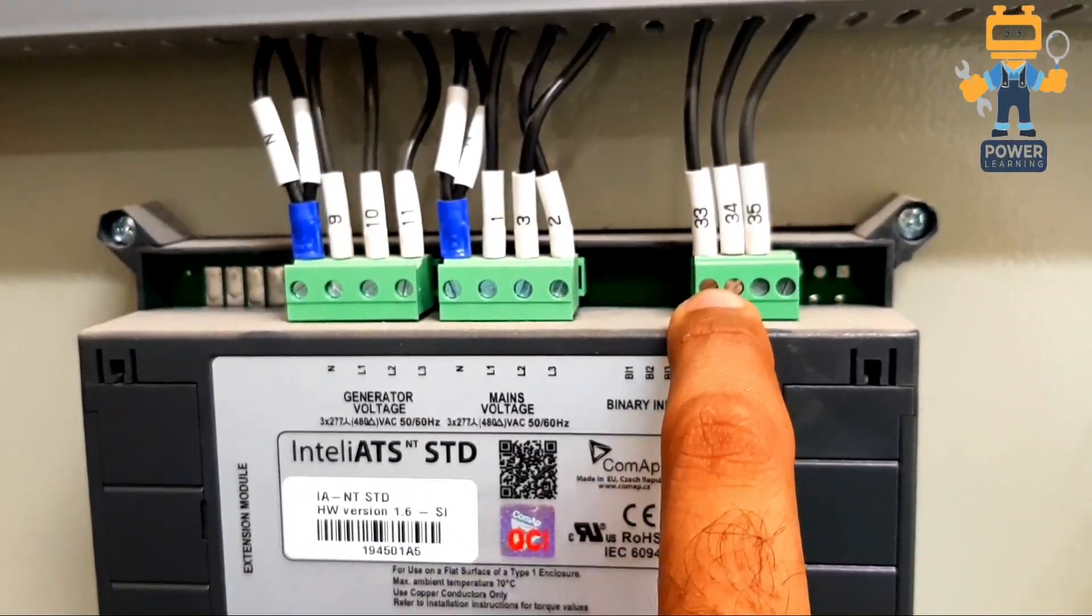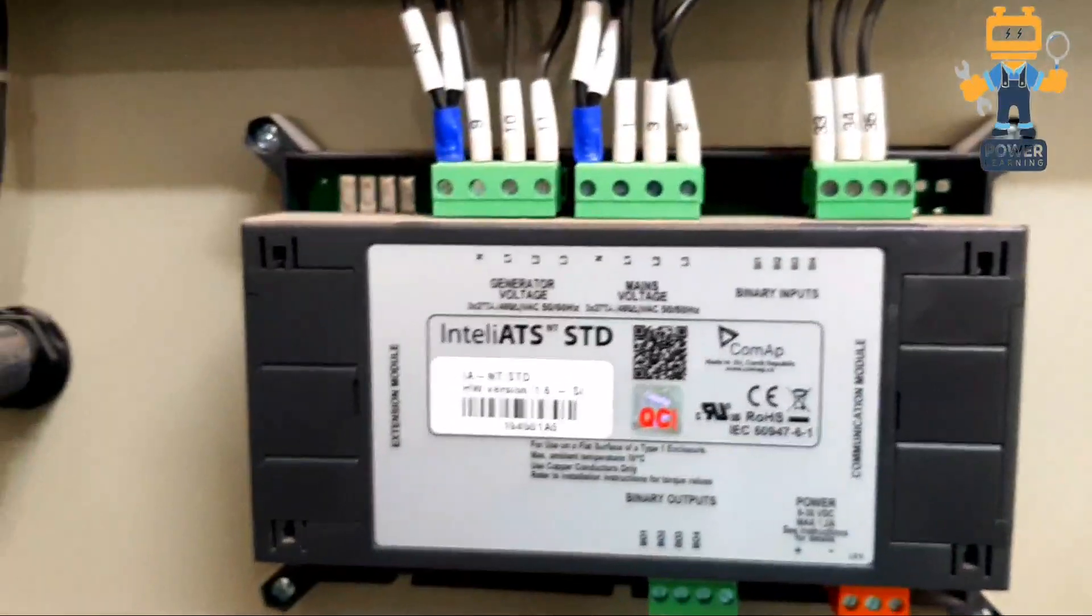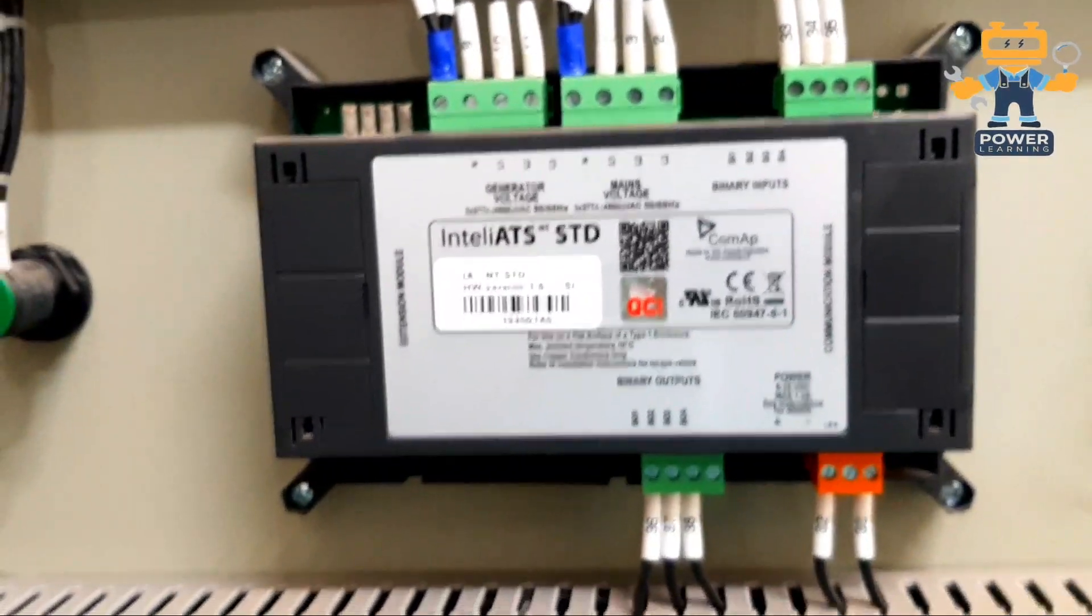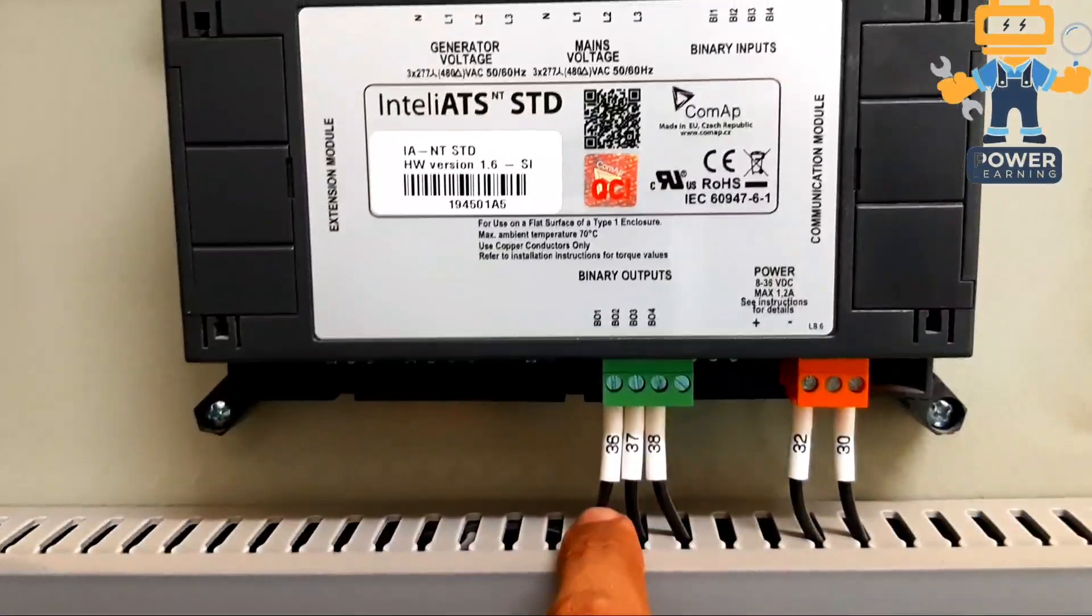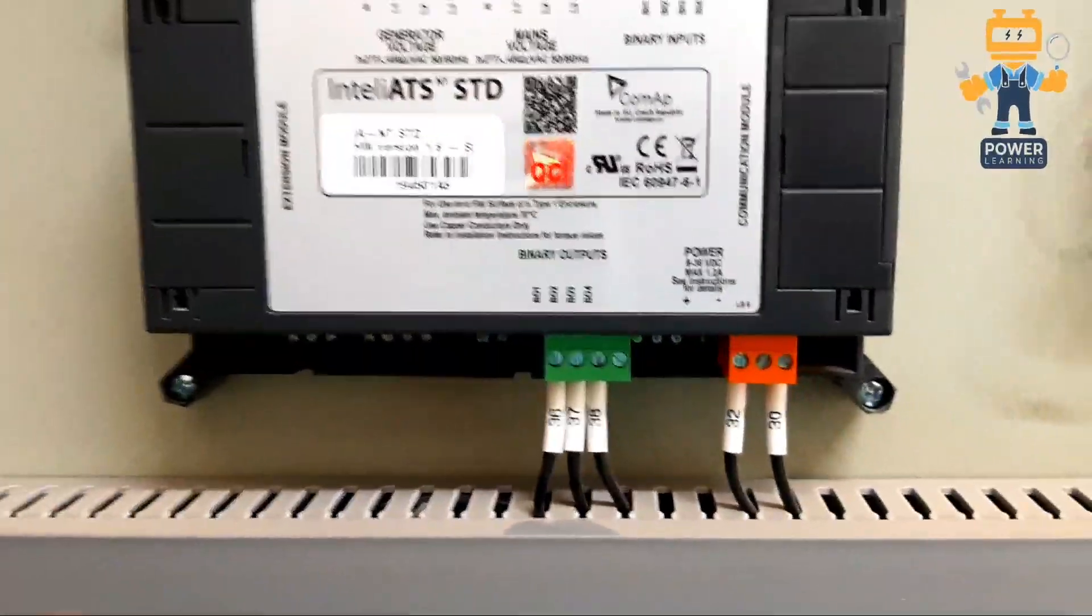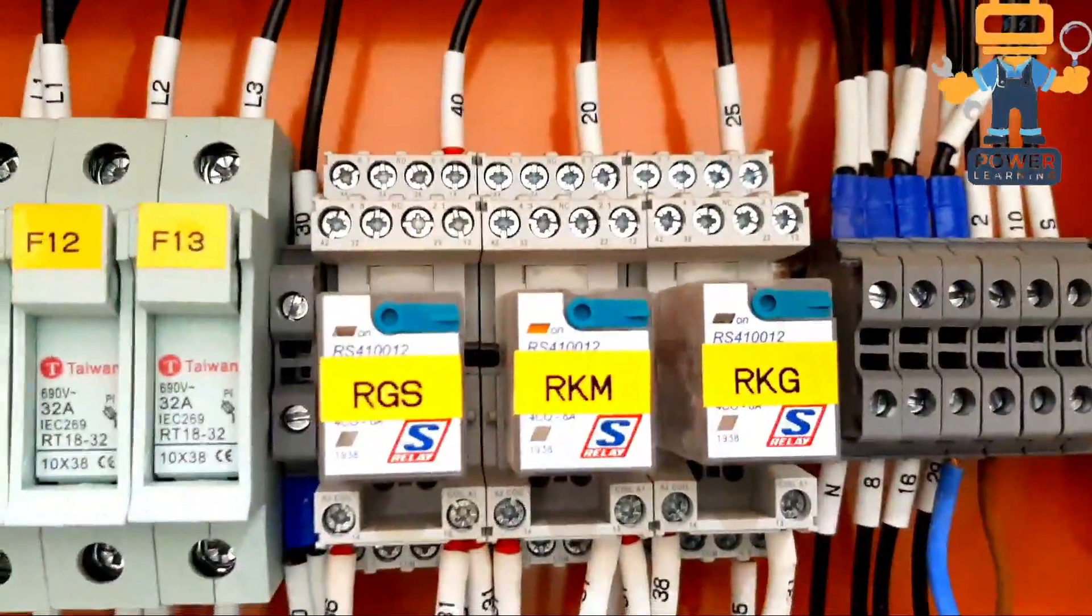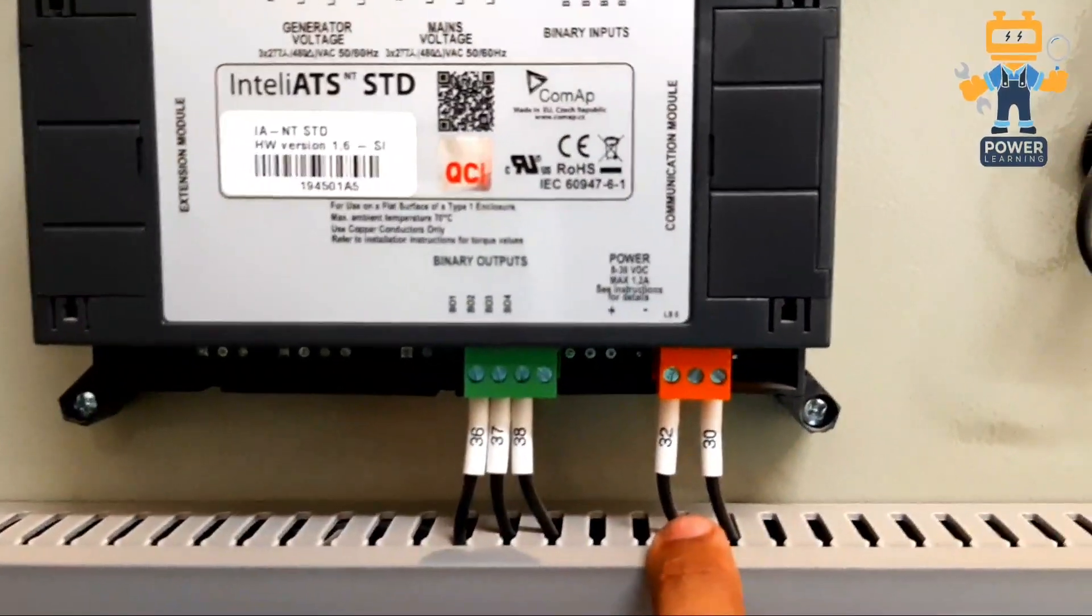Here we have binary outputs. Binary outputs are like digital outputs. These two are controlling our two contactors here. These two relays, RKM and RKG. As you see now, RKM is energized. It is taking power from here and this is power supply for the meter.